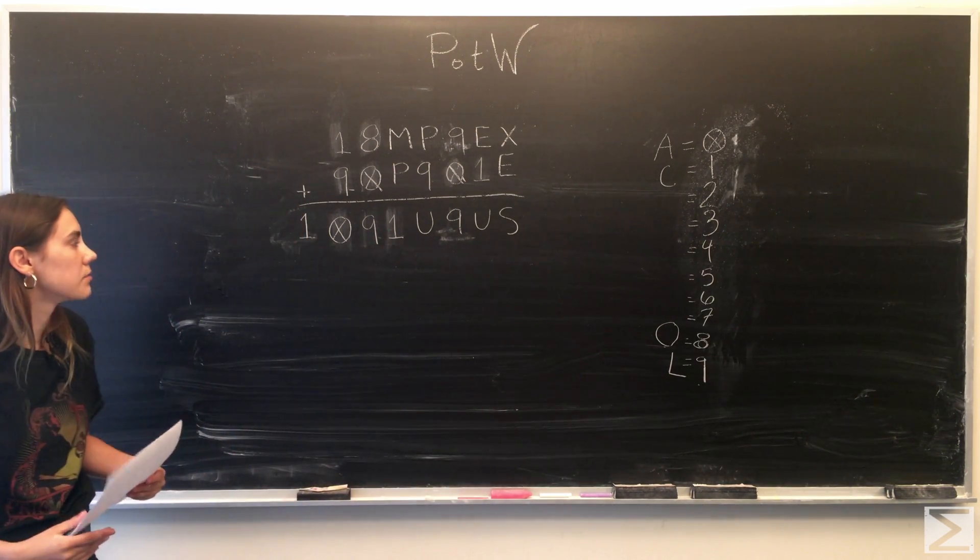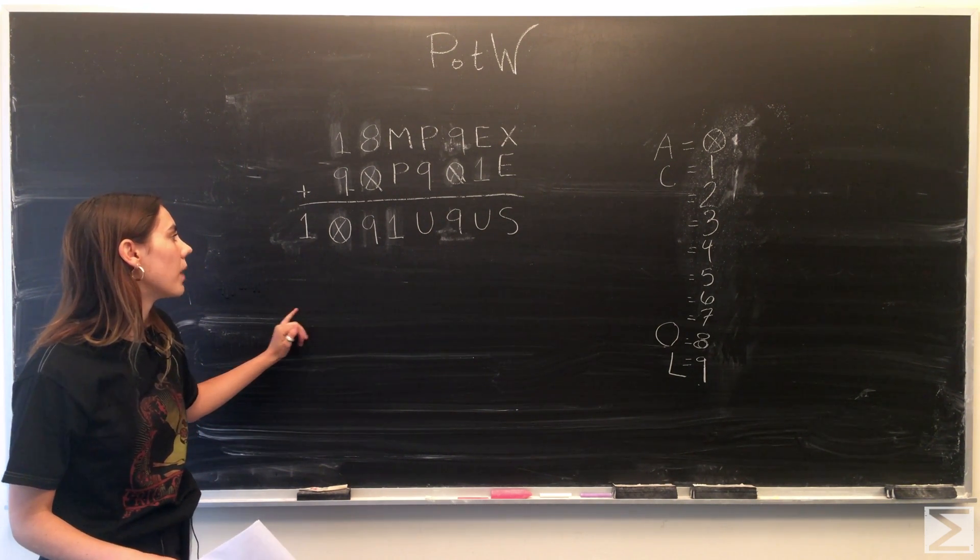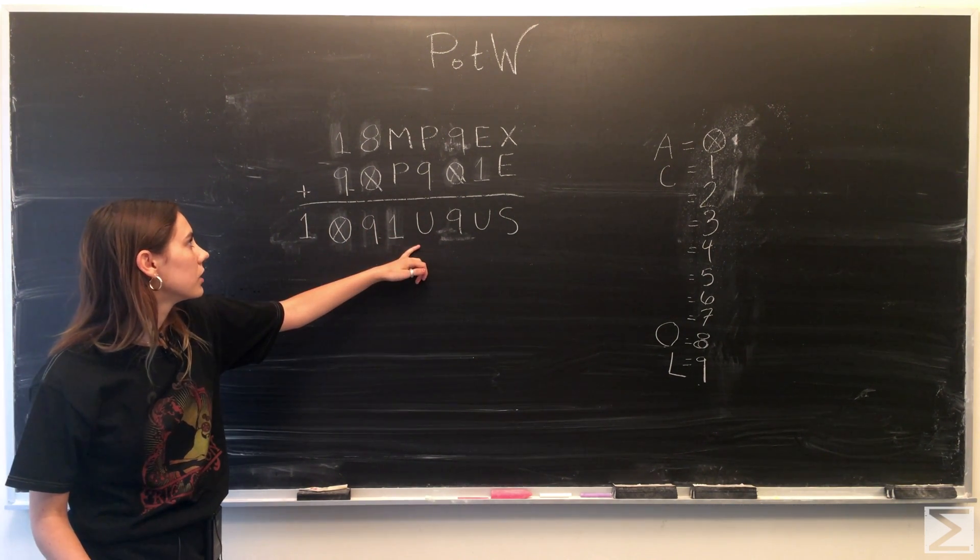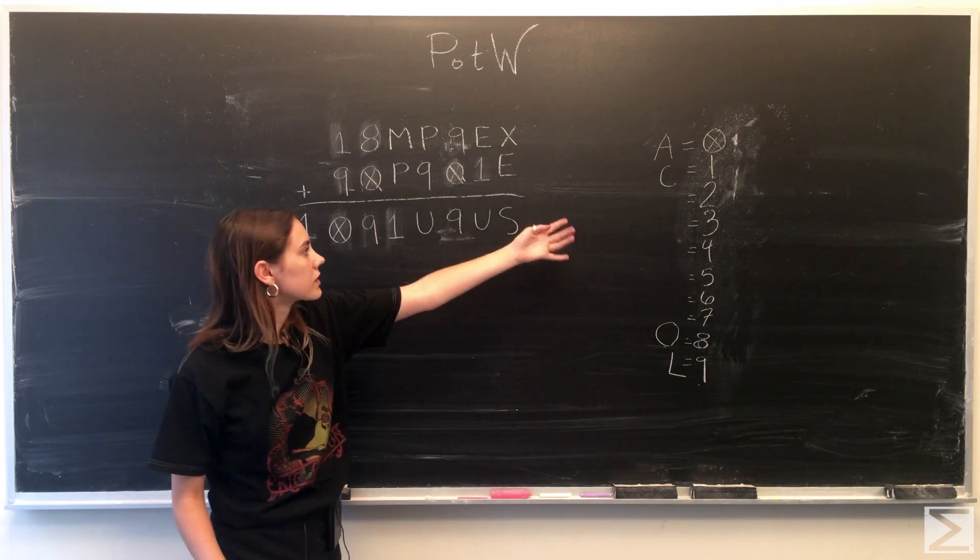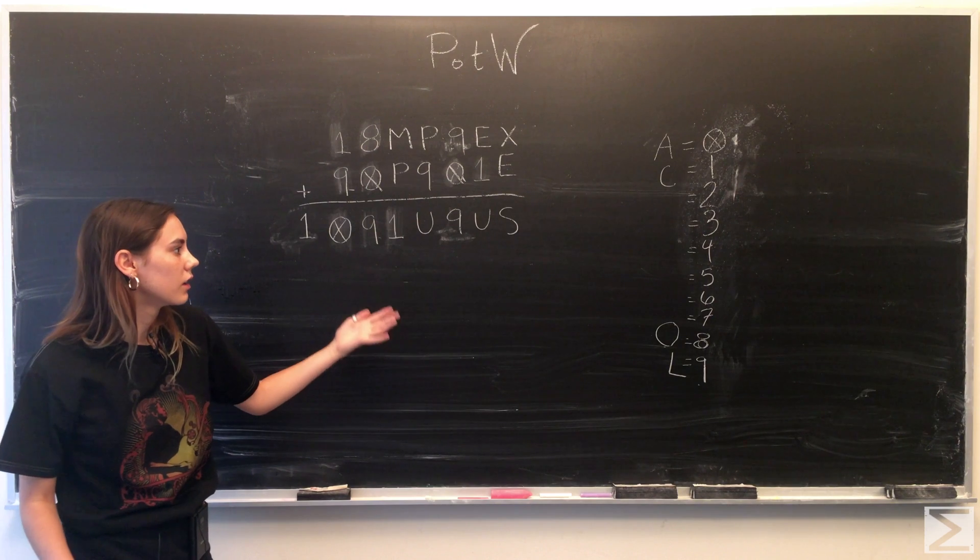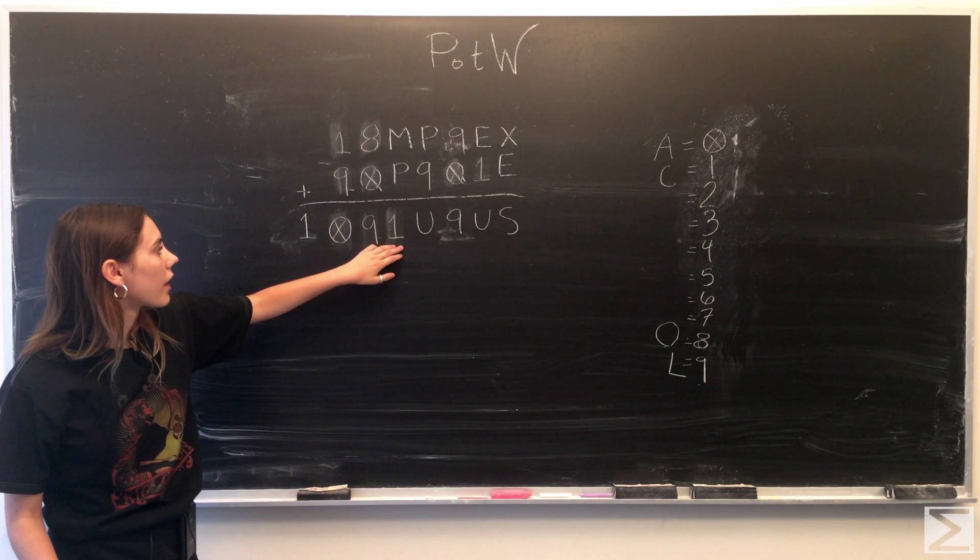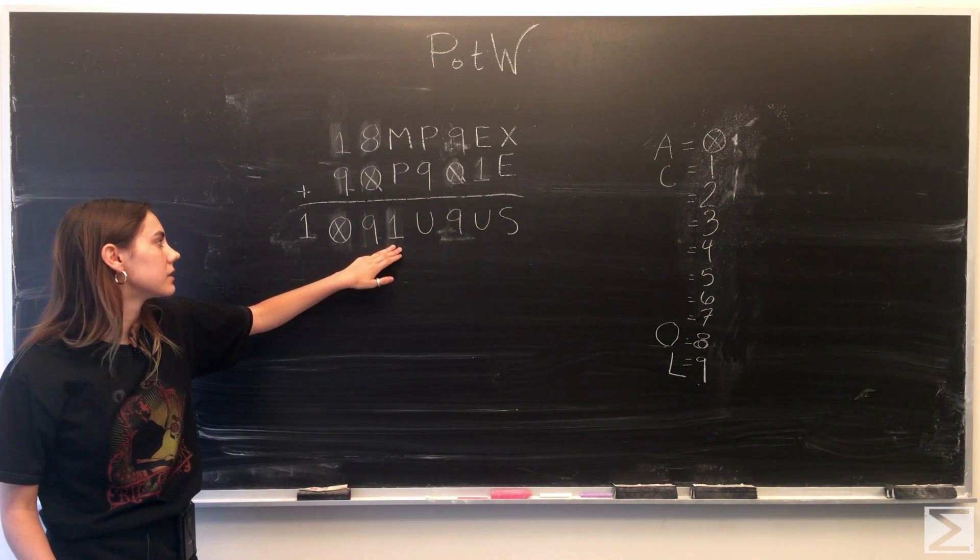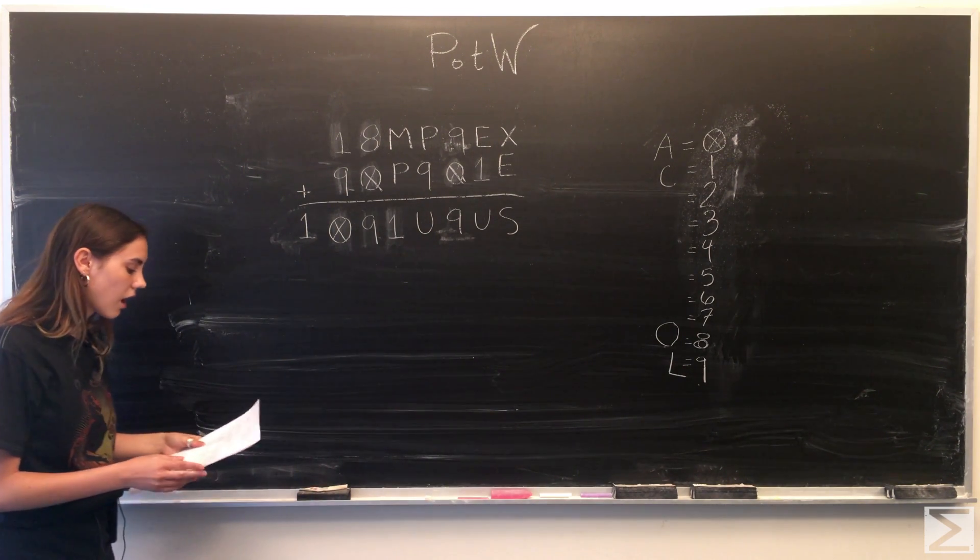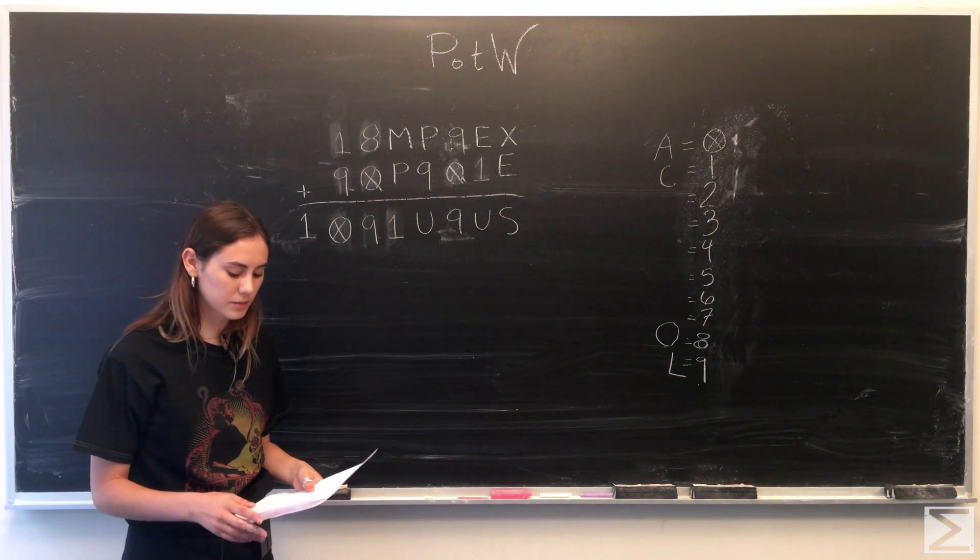Since we just talked about it, we know that M plus P must equal 11. Looking at this row, P plus Q is equal to U. You'll notice that any of the options that we could have for what P would equal would also carry a 1. So 2 through 7 plus 9 carries a 1 automatically. In this row where M plus P equals 11, that means there's this extra 1 being carried over. So M plus P must equal 10. That gives us a couple options for what M and P could equal specifically.